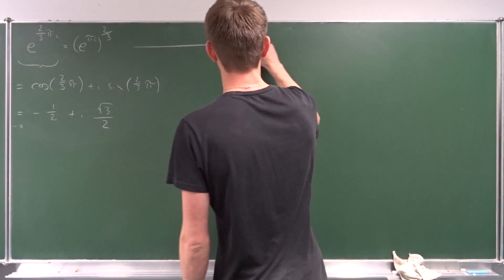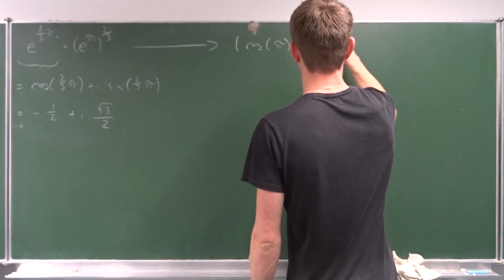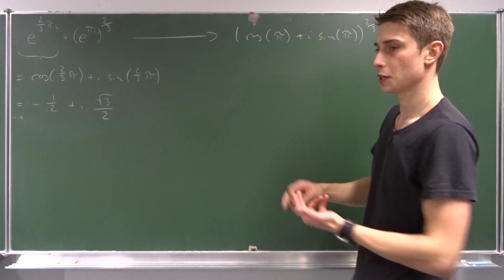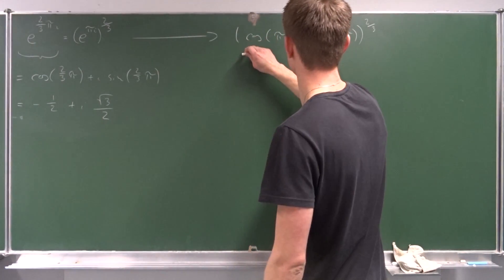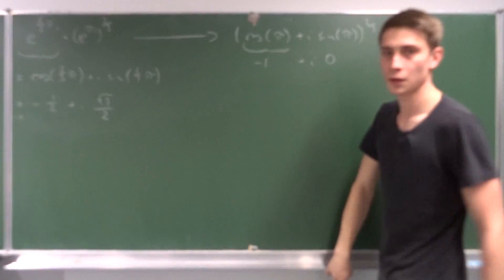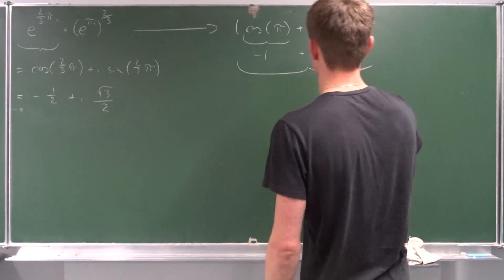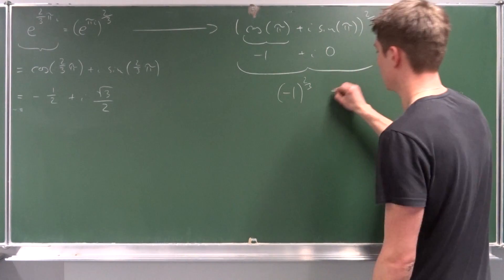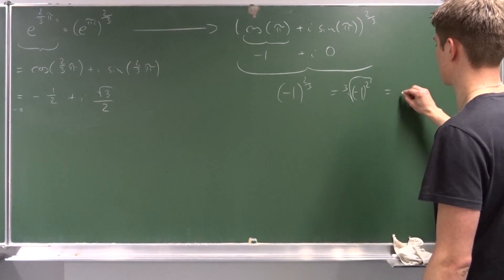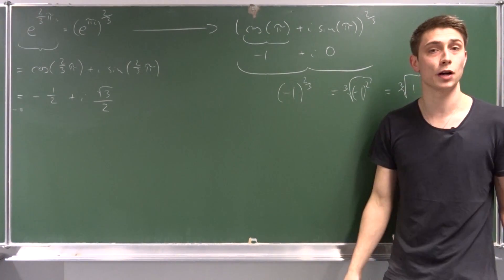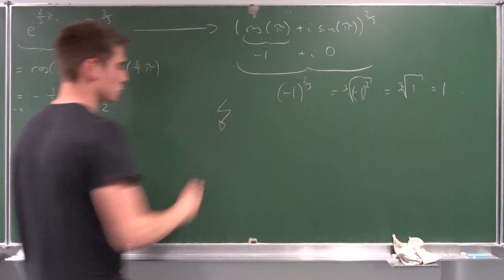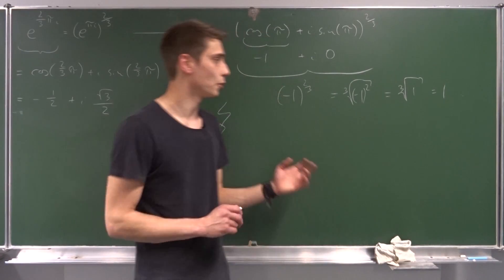The right side gives you the cosine of pi plus i times the sine of pi, all to the two-thirds power. The cosine of pi is minus one, and the sine of pi is zero, so this whole thing becomes minus one to the two-thirds power. He then said this equals the cube root of minus one squared, and since minus one times minus one is one, this is just the cube root of one, which equals one. Here's the contradiction: those two results are not equal.